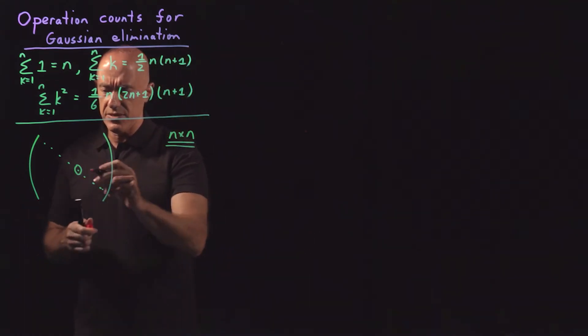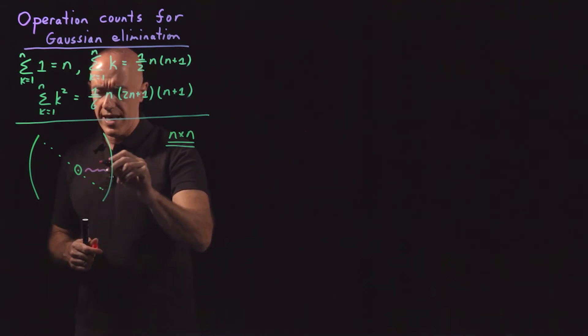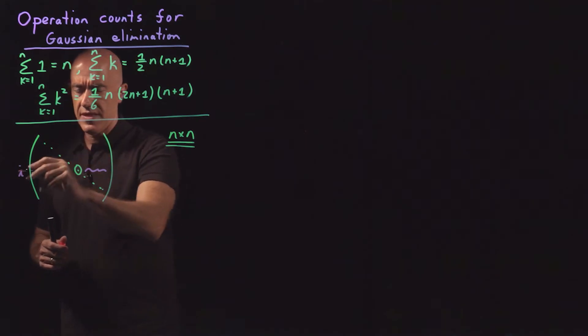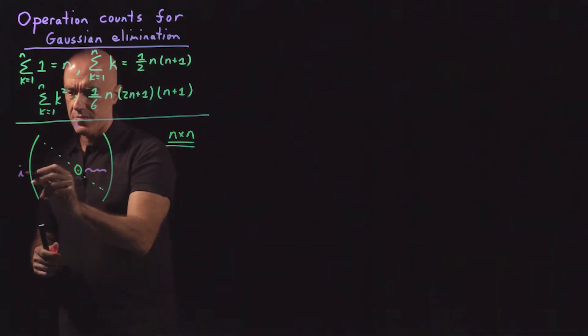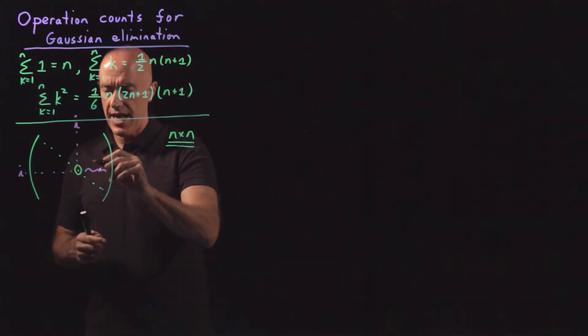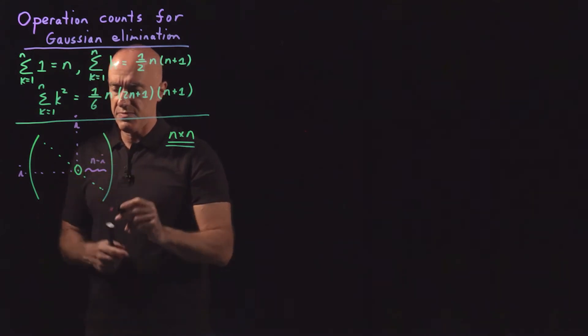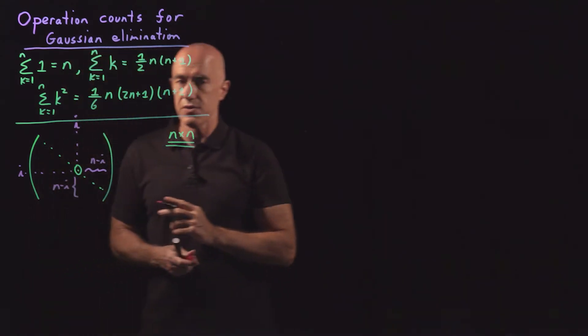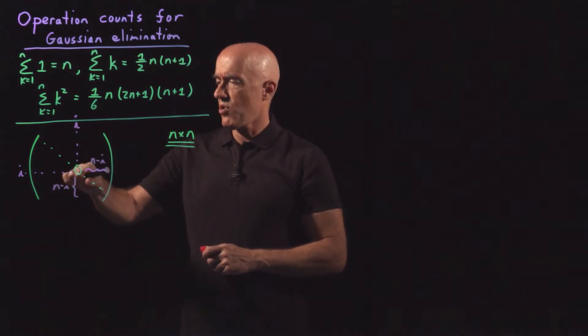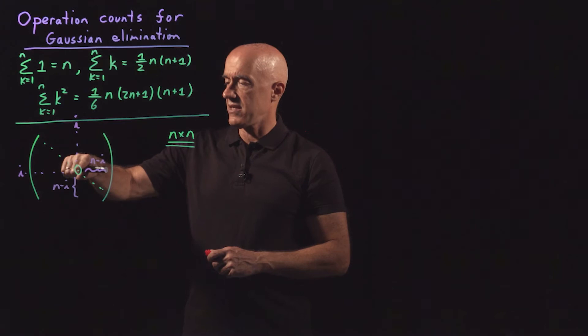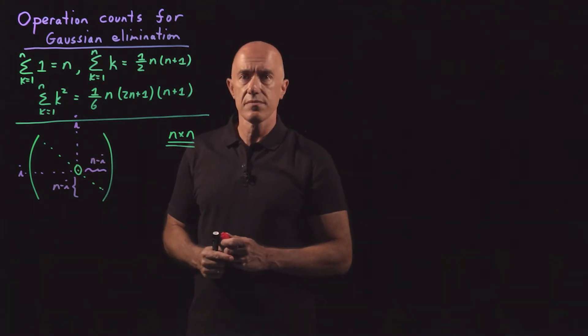So what do we need to do then in Gaussian elimination in this step? We have how many elements to the right of the pivot. Here we have, it depends where this pivot is, right? So this pivot, let's say, is in the i position, the i-th row and the i-th column. This is an n by n matrix. So we have n minus i elements to the right of this pivot. How many rows underneath this pivot do we have? We also have n minus i rows.